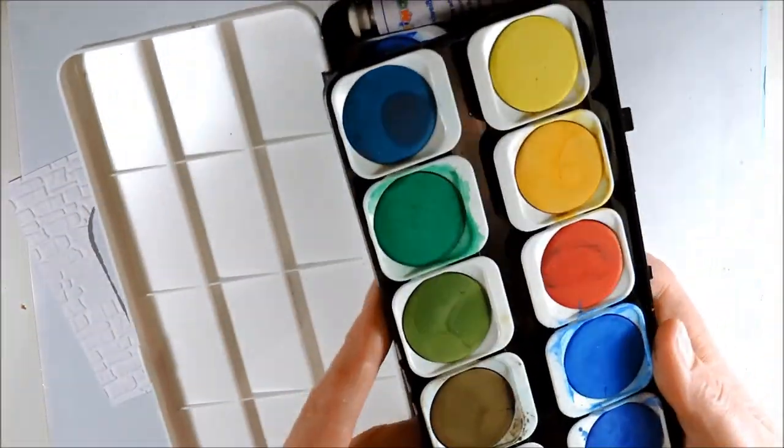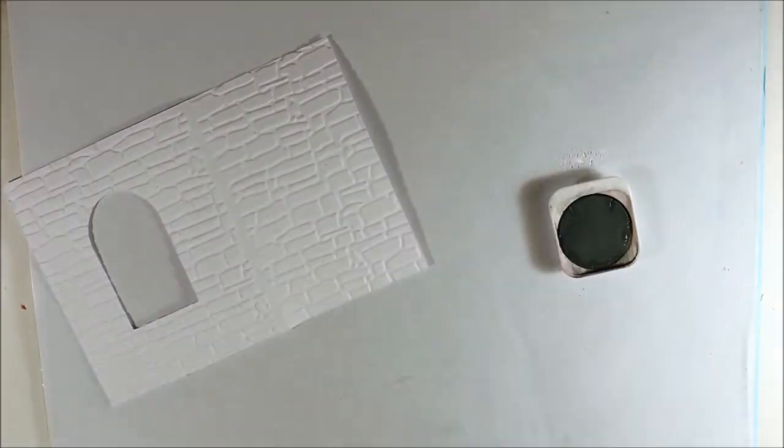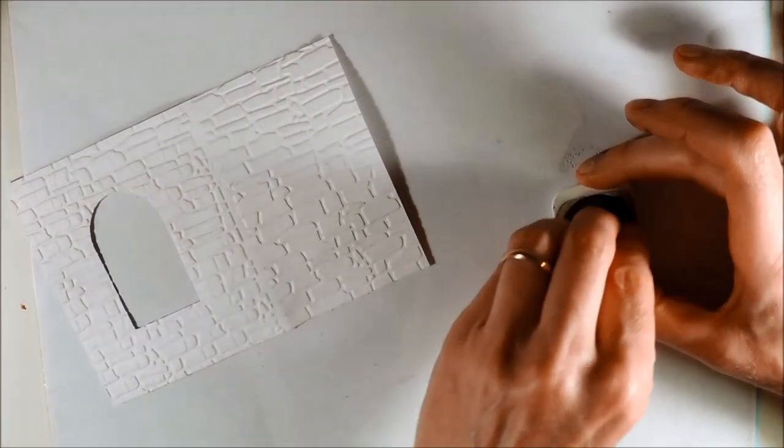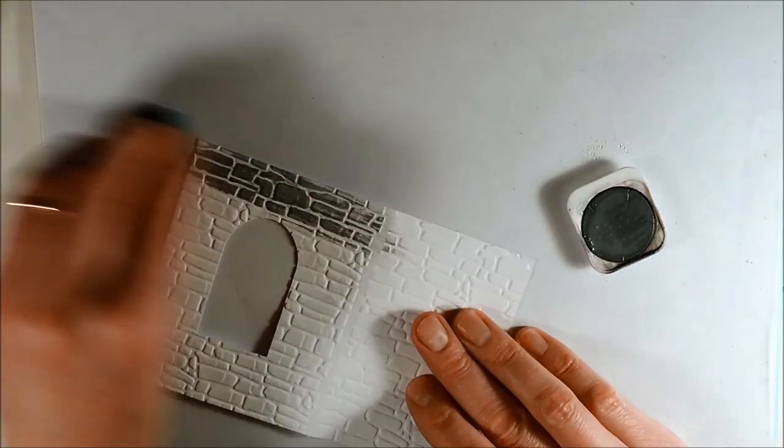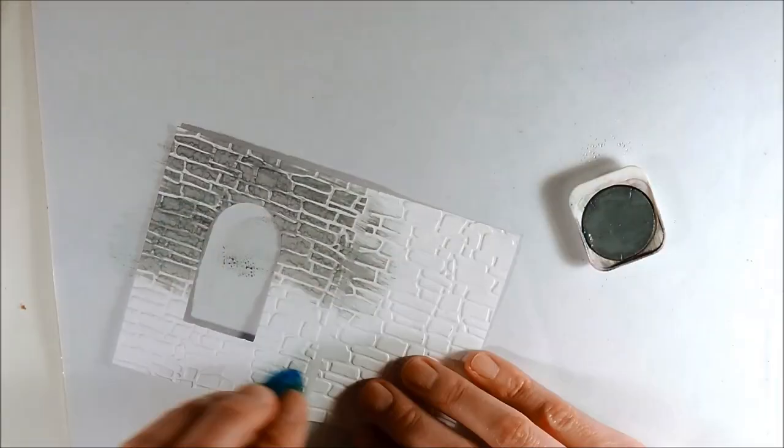From this watercolor set I am using this gray to color the panel. I am spraying a sufficient amount of water on top of the color and then I am applying the color using an ordinary sponge.